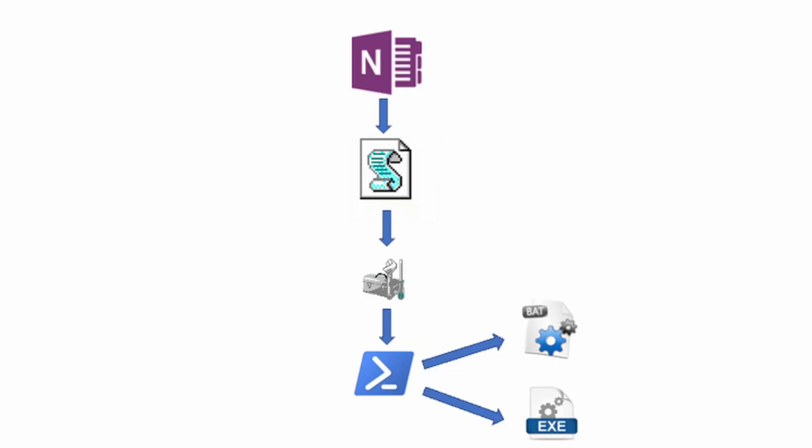If you have process monitoring enabled in your environment, you should be able to catch this behavior. It is not normal for WMIPRVSE.exe — the WMI process — to execute CMD.exe and in turn launch PowerShell.exe, and then have an executable and a BAT file dropped on disk.